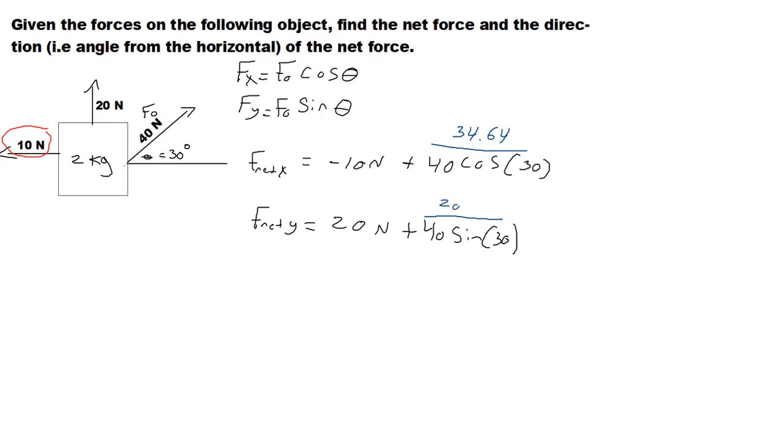The sine of 30 is one-half, so 40 sine 30 is going to give you 20. Let's find these components very quick: negative 10 plus 34.64 gives you 24.64, and 20 plus 20 is 40 Newtons.